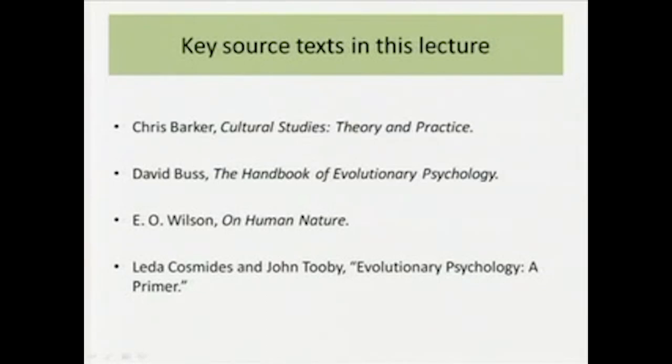The key source texts for today's lecture are: Chris Barker's Cultural Studies: Theory and Practice; David Buss's Handbook of Evolutionary Psychology; E.O. Wilson's On Human Nature and Sociobiology; and Leda Cosmides and John Tooby's Evolutionary Psychology: A Primer. When time is short and we must cover concepts within a single lecture, it is necessary to bring just a few key books to your notice.